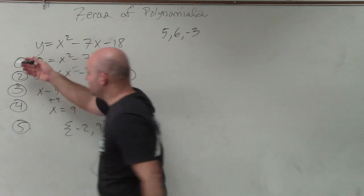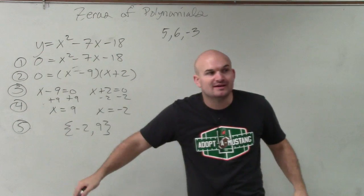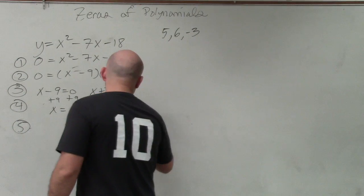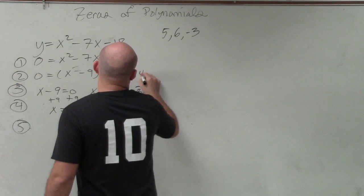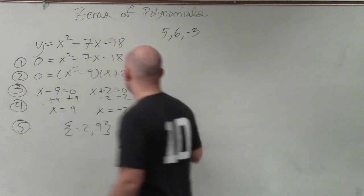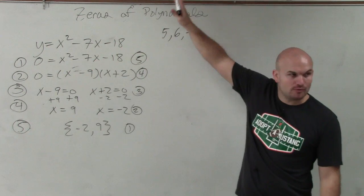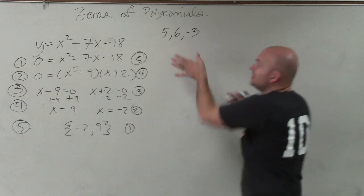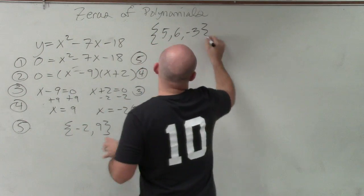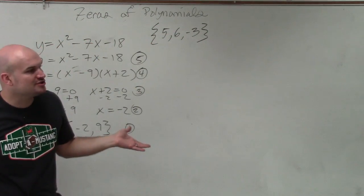So all we're going to do, if you follow the steps 1, 2, 3, 4, 5, now all we're going to do is reverse the steps. Now we're just going to go all the way back up. So if I give you a list of zeros, that's like the same thing as saying that's the solution set.